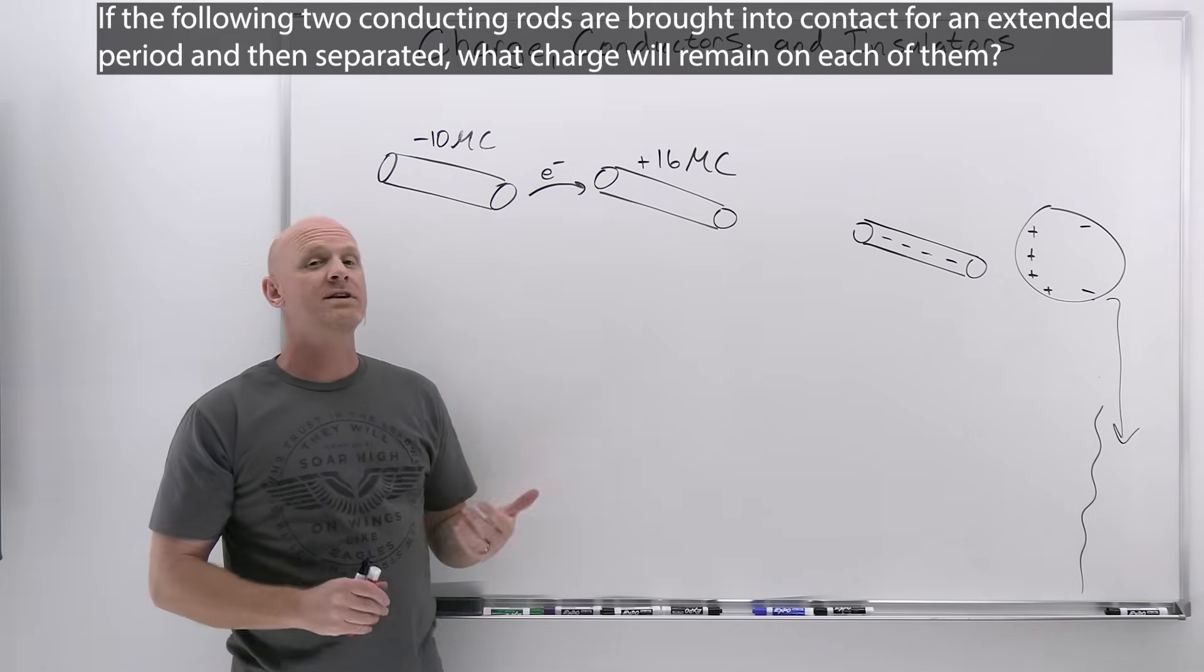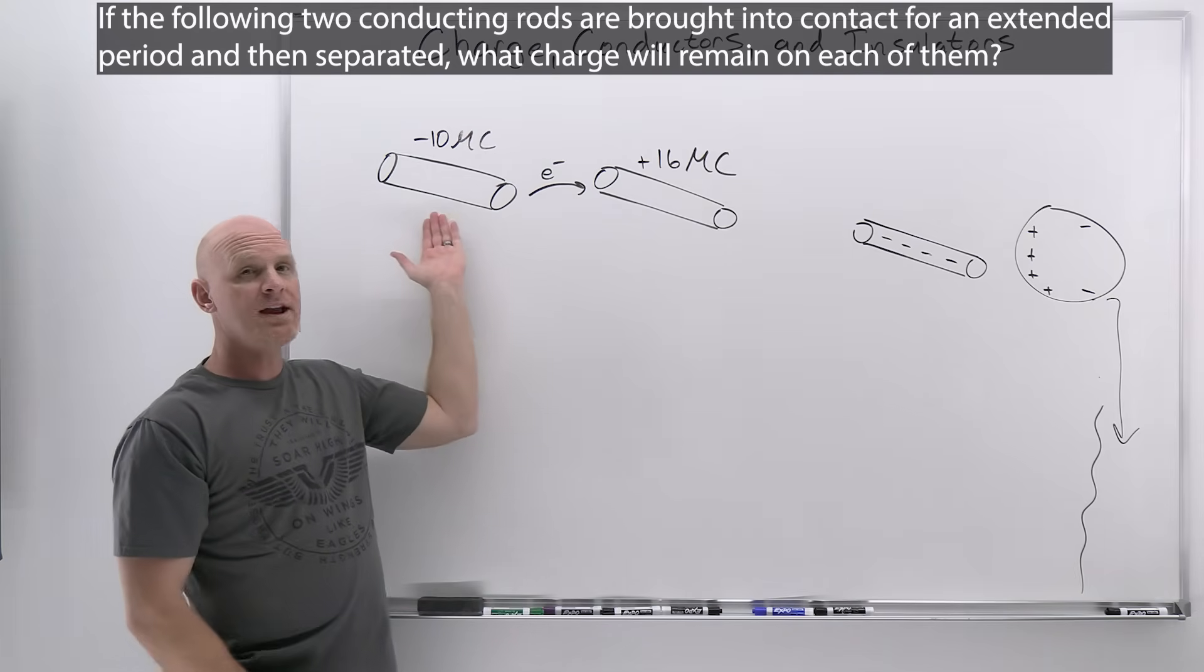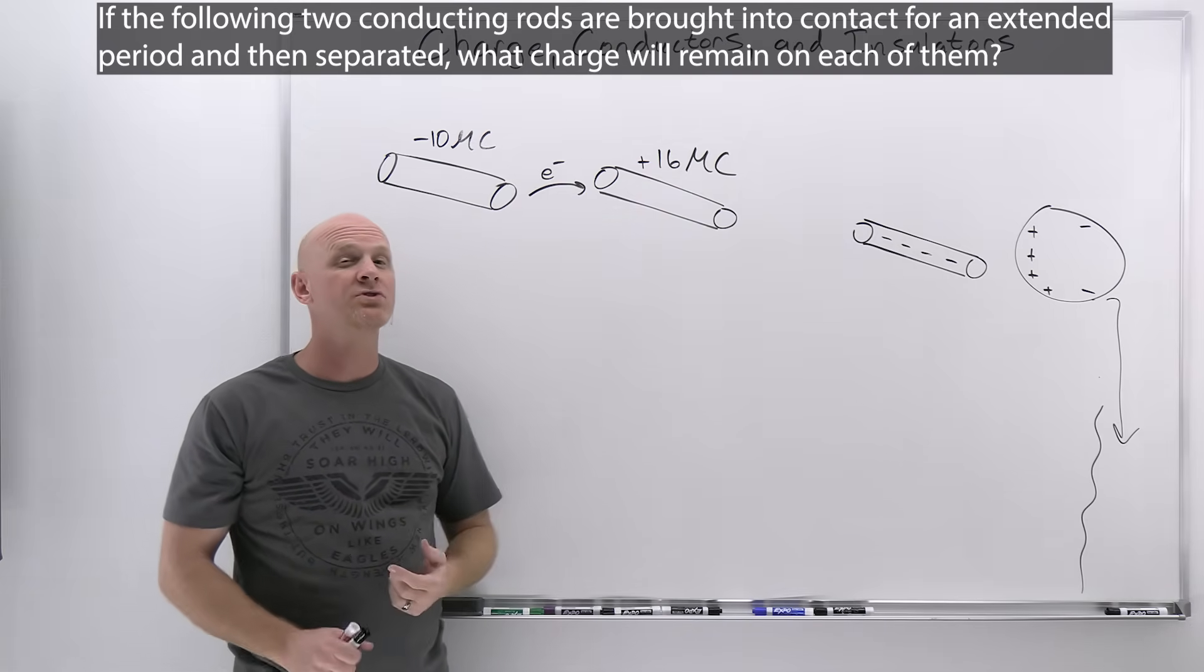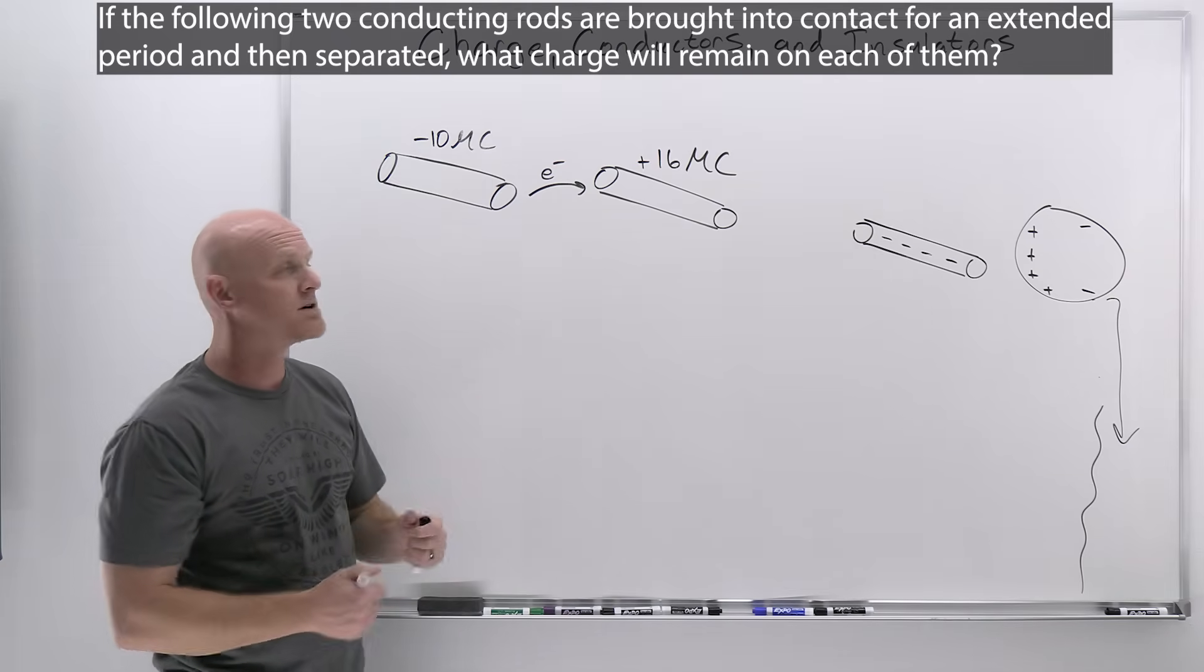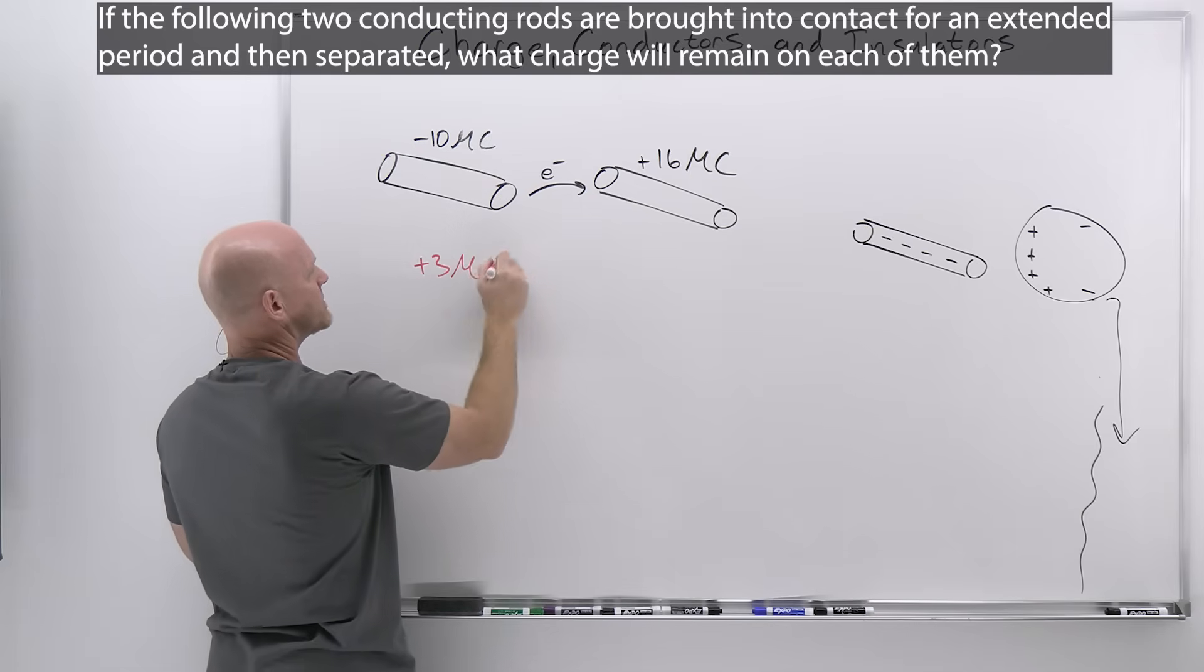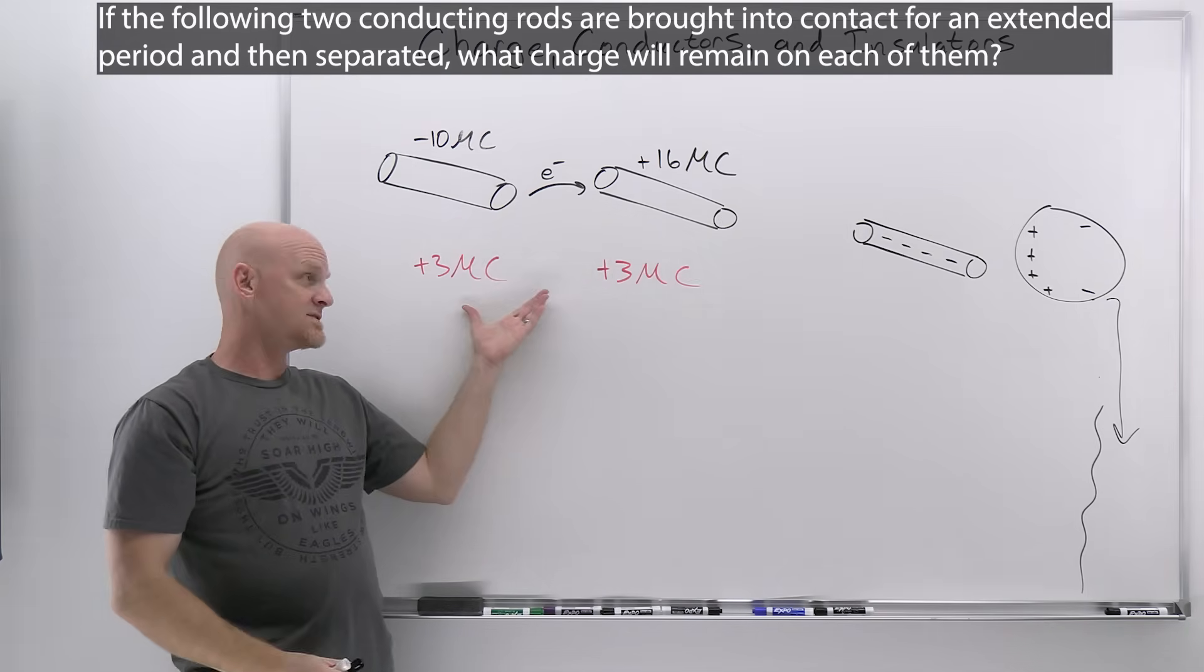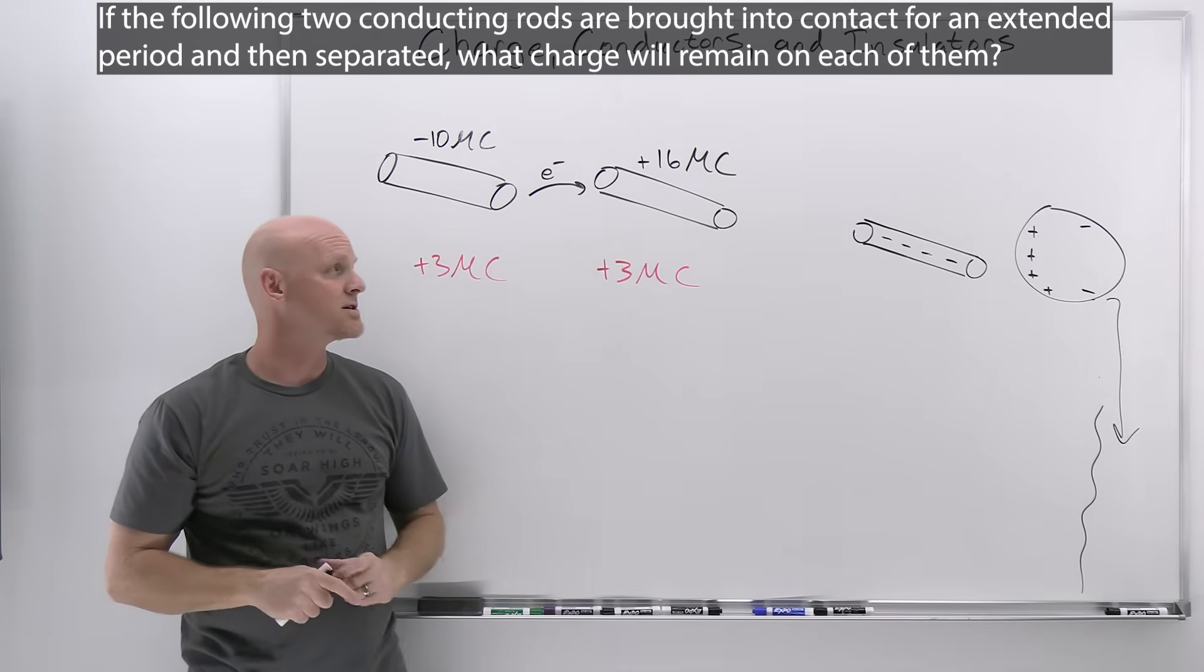We have to remember that charge is conserved. In this case, that means the charge of this system as a whole. With negative 10 microcoulombs and positive 16 microcoulombs, that's an overall charge of positive 6 microcoulombs. If charge is conserved and these are going to end up with the same charge, we can split that in half and say positive 3 microcoulombs would be on the rod on the left and positive 3 microcoulombs on the rod on the right. It would still add up to positive 6 microcoulombs, and charge is conserved.